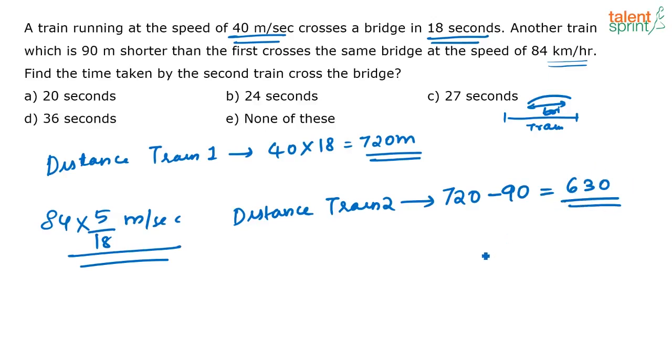Do you understand how I get this 630? What is the distance traveled by train 2? The distance traveled by train 2 is nothing but the length of train 2 plus the length of the bridge. The length of the bridge is remaining the same. Earlier case also it was same, here also it is same. But when you look at the length of the train, here if it is L, this is L minus 90. So if the total distance that is traveled by train 1 is 720 meters, this train would have traveled only 720 minus 90 because it is 90 meters less, or it is traveling only 630 meters.